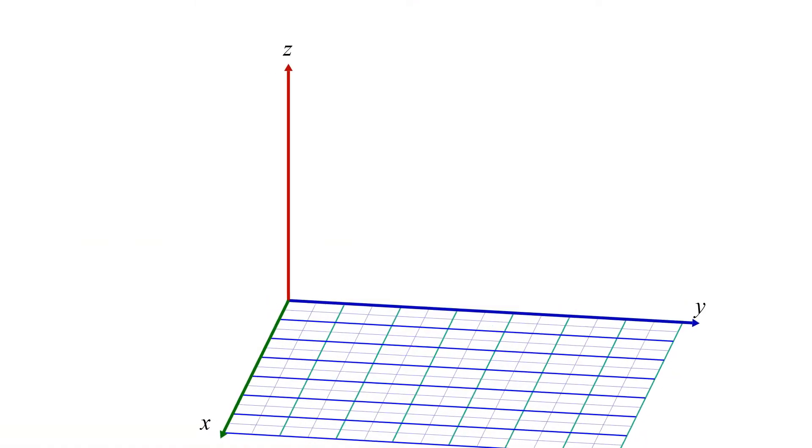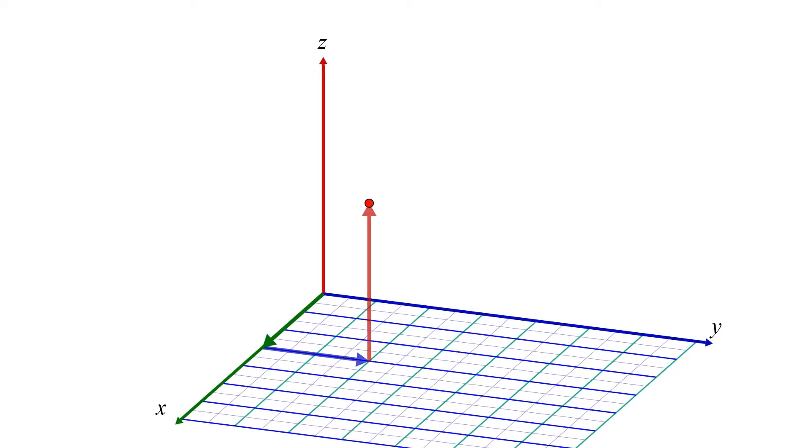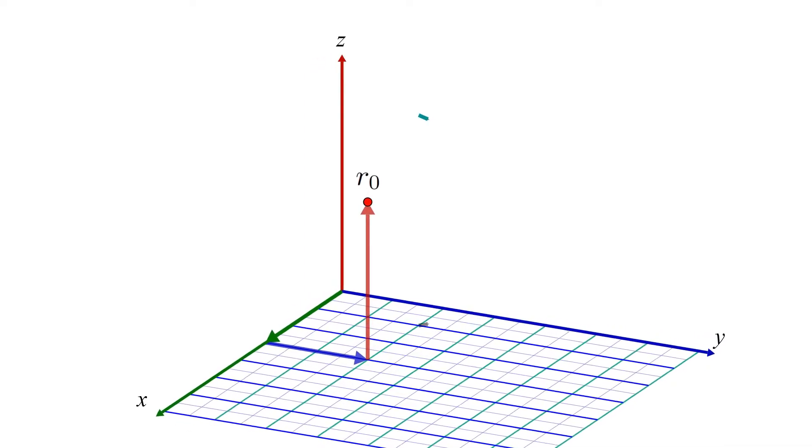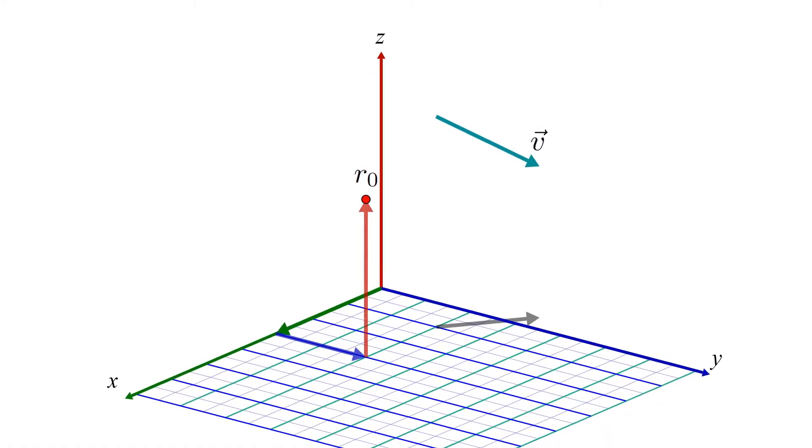In three dimensions, we still need two pieces of information: a point r0 in 3D space that is on the line, along with a vector v that is parallel to the line which represents the direction the line goes in.